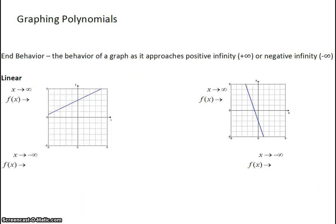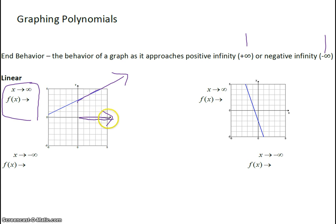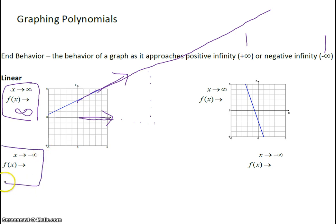Now let's talk about end behavior — the behavior of the graph as it approaches infinity and negative infinity. As x approaches infinity, so as x gets really big, our function is increasing and going off forever, approaching infinity. So as x approaches infinity, f(x) also approaches infinity. As x approaches negative infinity, our function is going down and approaching negative infinity. This is how it works for linear functions with a positive slope.